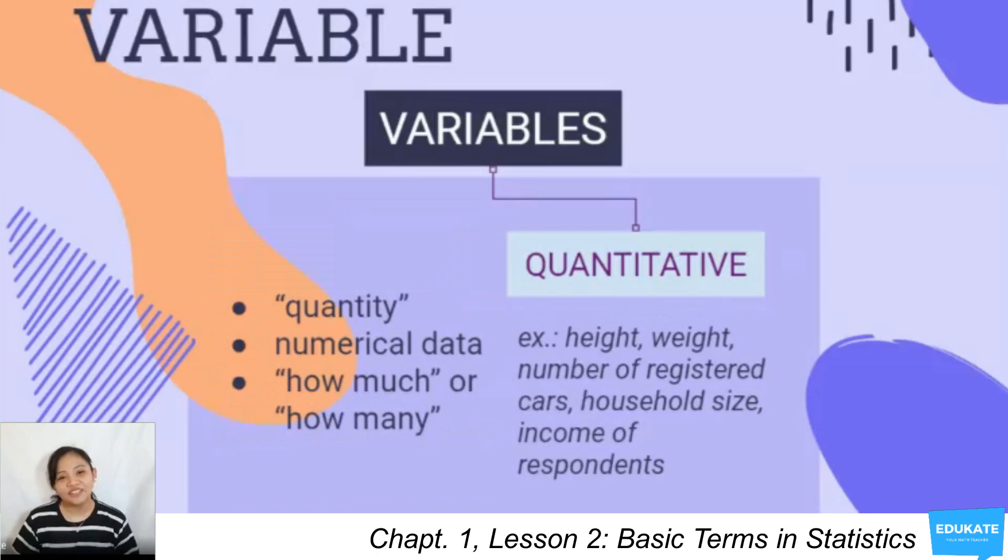Second one, we have quantitative variables under the word quantity. These are referred to as numerical variables. These variables answer the question of how much or how many. Our examples here are height, weight, number of registered cars, household size, income of respondents.